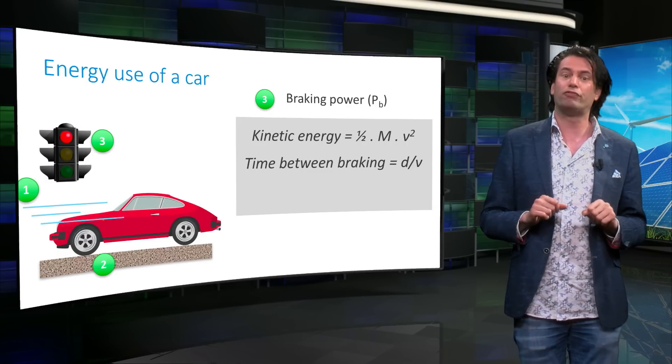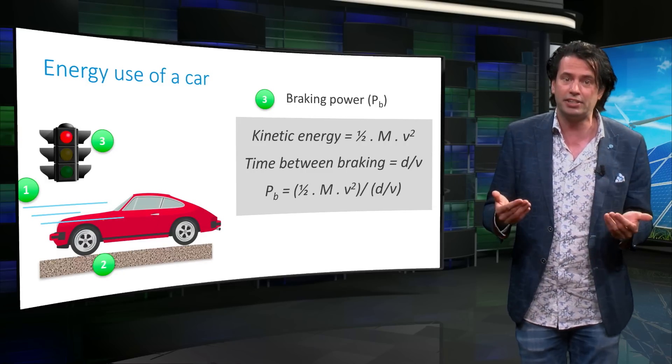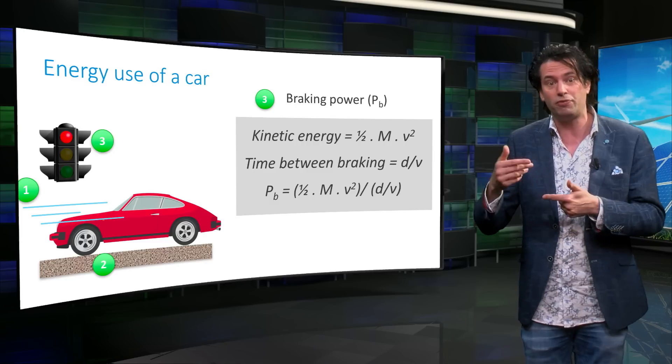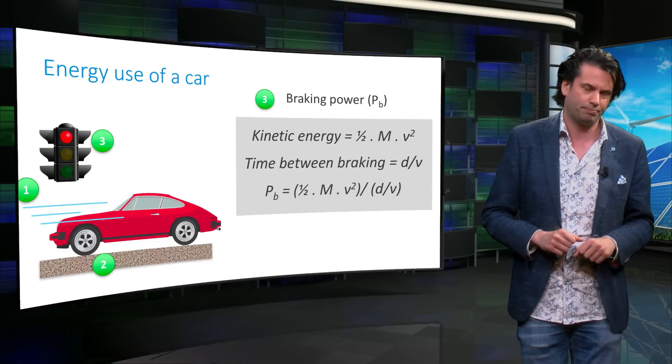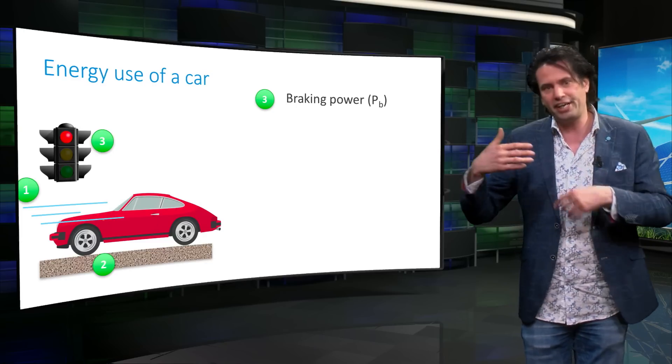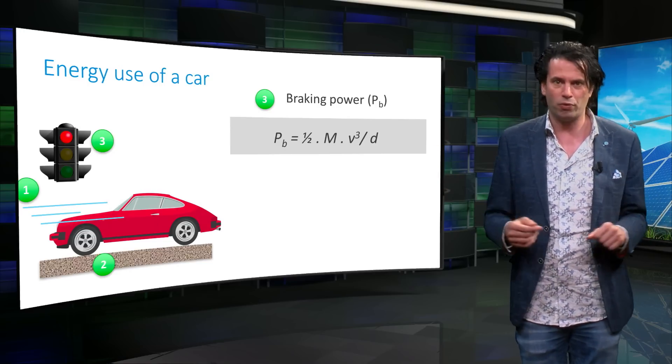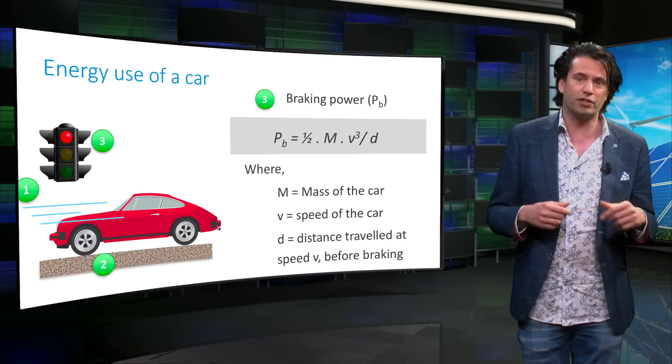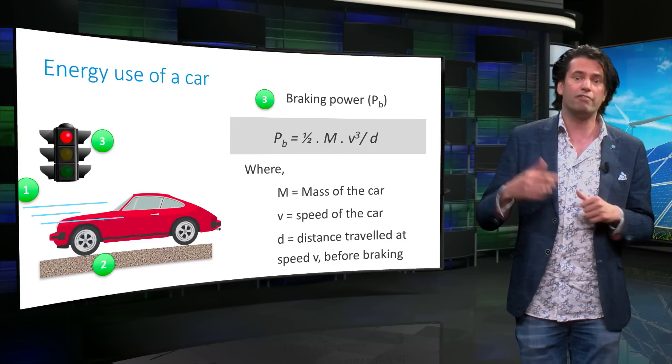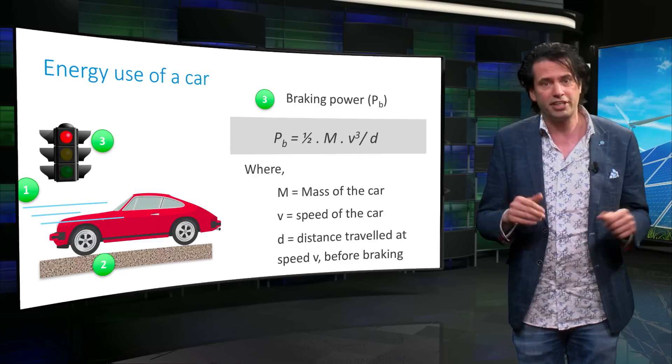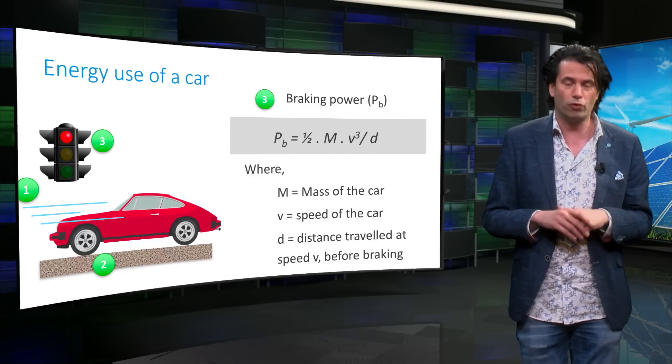Now the equation for the braking power, Pb, becomes the kinetic energy divided by the time between two braking events. Rearranging the terms in this equation gives us the final definition for the braking power, which is half times the mass of the car times V to the power 3 divided by the distance travelled at speed V before braking.